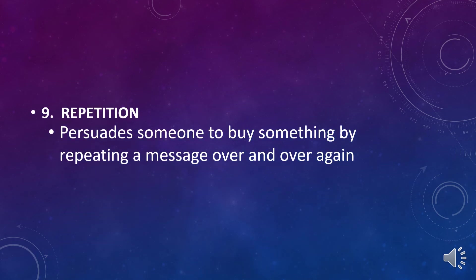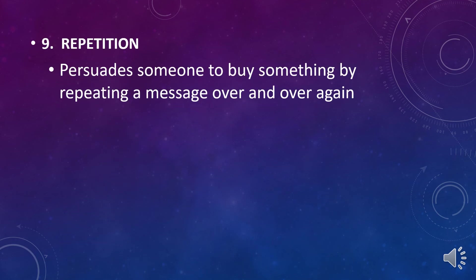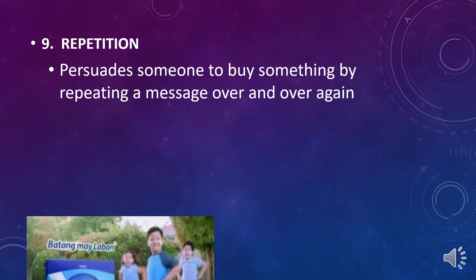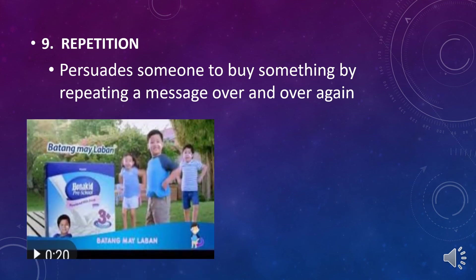Number nine is repetition. Repetition persuades someone to buy something by repeating a message over and over again. Commercials on television persuade people to buy a product because of its repetitive showing of the product on TV.